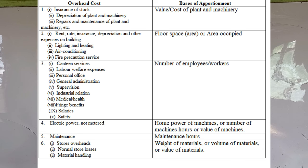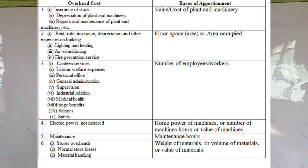For rent, rates, insurance, depreciation, and other expenses on your building, the most common basis is floor area occupied or floor space occupied. For lighting and heating — since you are lighting and heating the building — the basis is also floor area occupied. Similarly, expenditure on air conditioning and fire precaution services use floor area occupied.